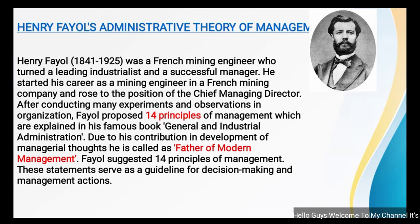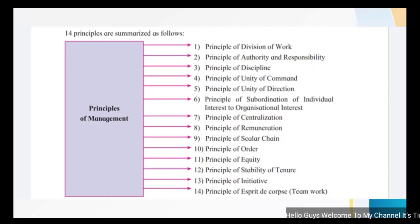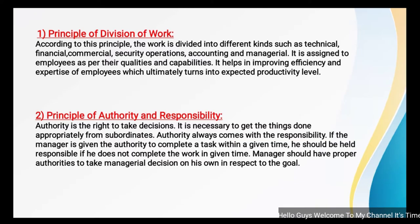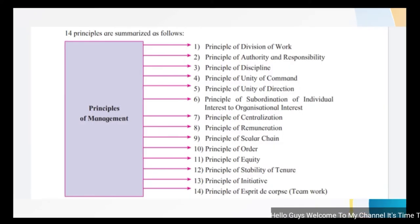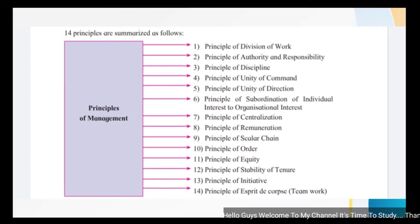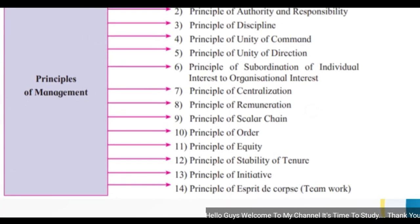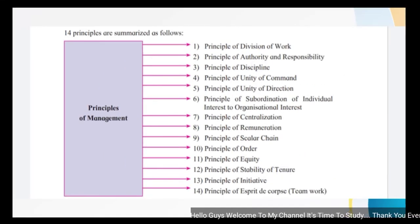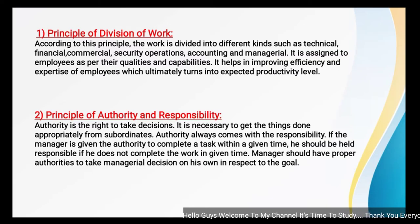We will study the 14 principles given by Henry Fayol one by one. These are: Division of Work, Authority and Responsibility, Discipline, Unity of Command, Unity of Direction, Subordination of Individual Interest to Organizational Interest, Centralization, Remuneration, Scalar Chain, Order, Equity, Stability of Tenure, Initiative, and Esprit de Corps.